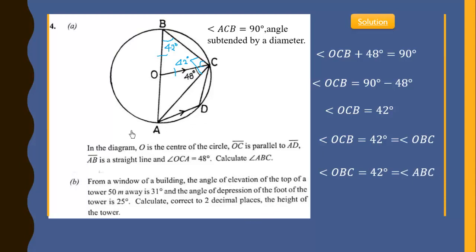Our second approach: we know the base angles of isosceles triangle OAC must also be equal, since OA and OC are both radii. If they are equal base angles, their sum is 96 degrees.